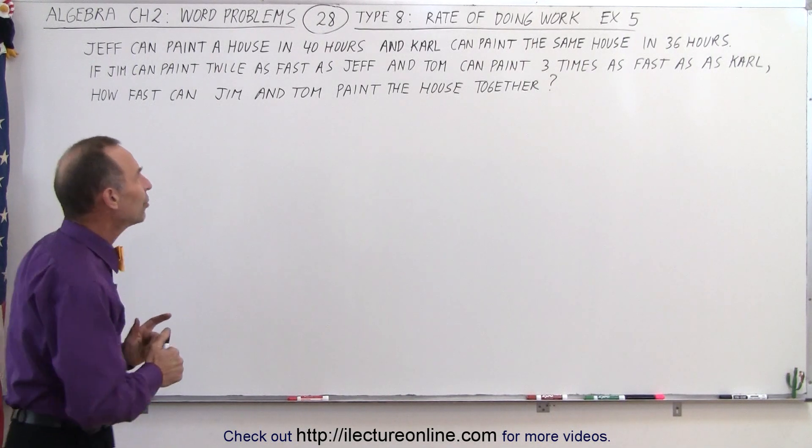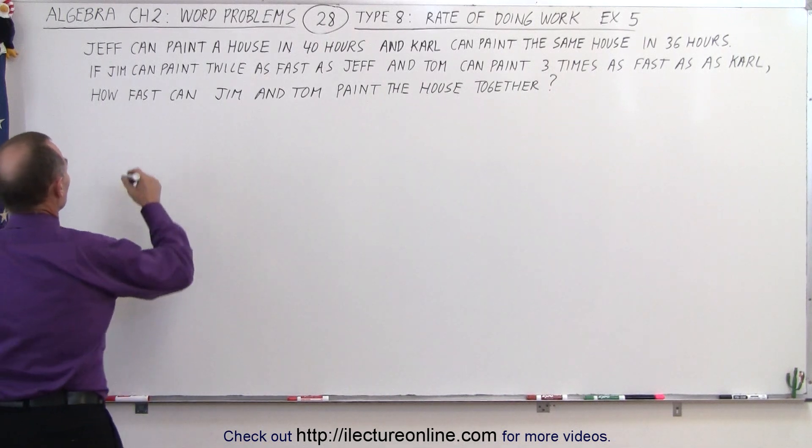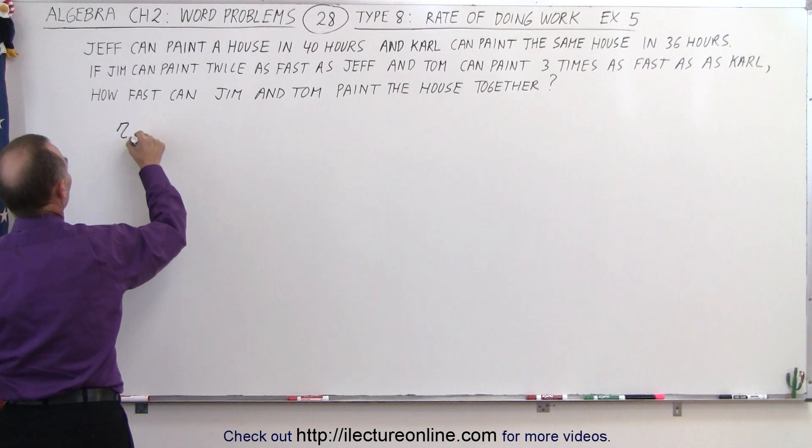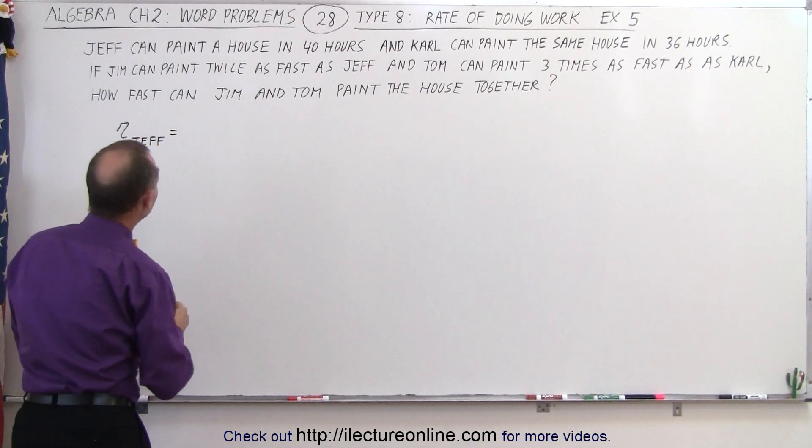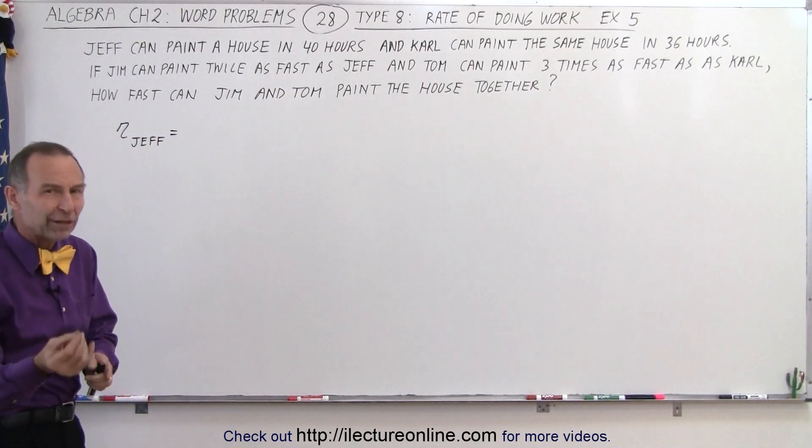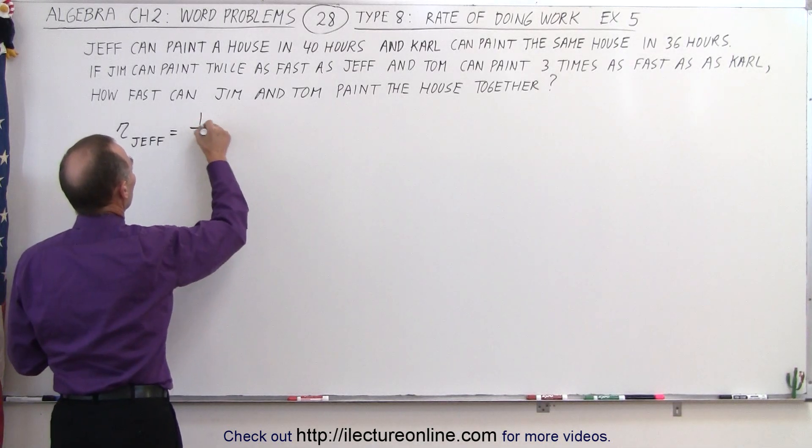First what we need to do is find the rates of Jeff and Carl. So the rate for Jeff, we'll subscript it with their names, is equal to, well, if Jeff can paint a house in 40 hours, then he can paint 1/40th of the house in every hour. So the rate for Jeff would be 1 over 40.